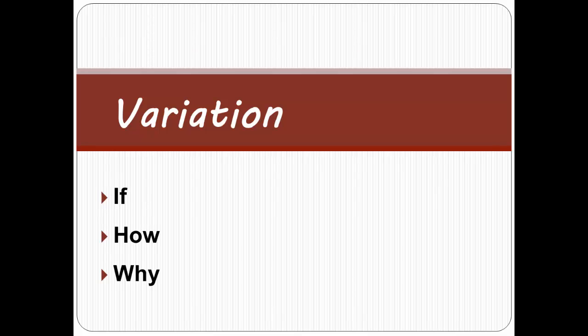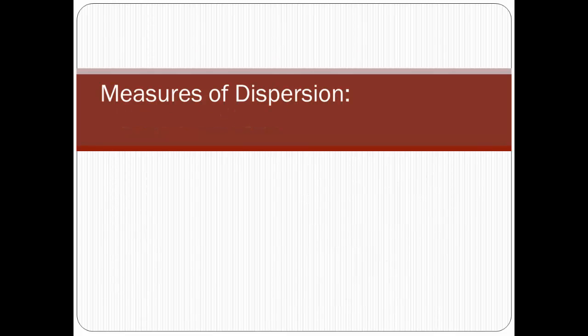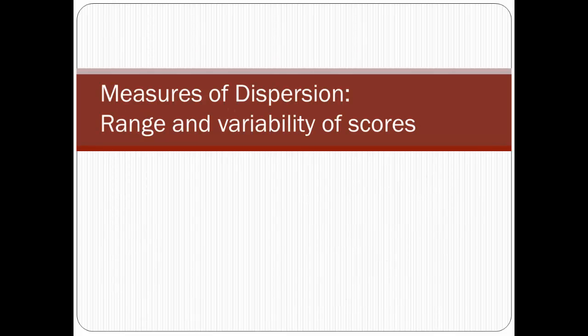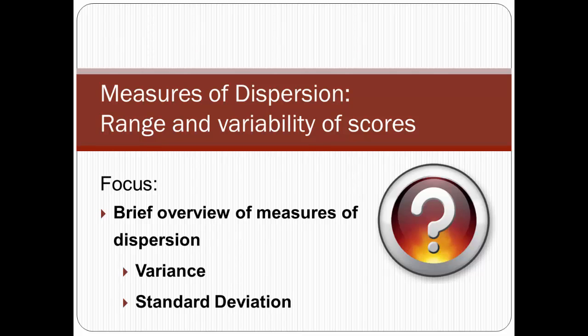The first step to determining if the data vary is to summarize the data. You're probably familiar with measures of central tendency — the mean, median, and mode. Now let's look at measures of dispersion, which help us understand the range and variability of scores in a dataset. The focus of this video is to provide a brief overview of the most common measures of dispersion, and provide more detail on two of those measures: variance and standard deviation.